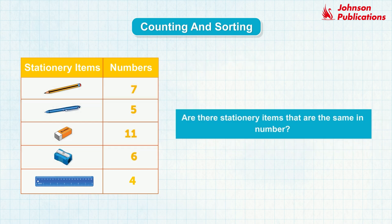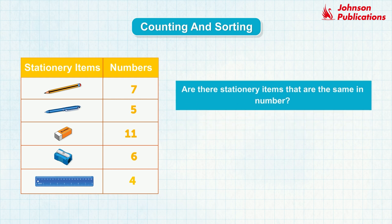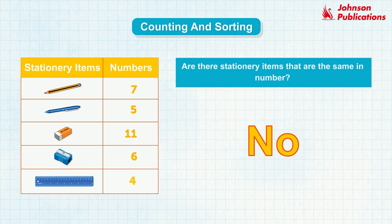Are there stationary items that are the same in number? By observing the table, we can see that no stationary items are the same in number. So the answer is no.